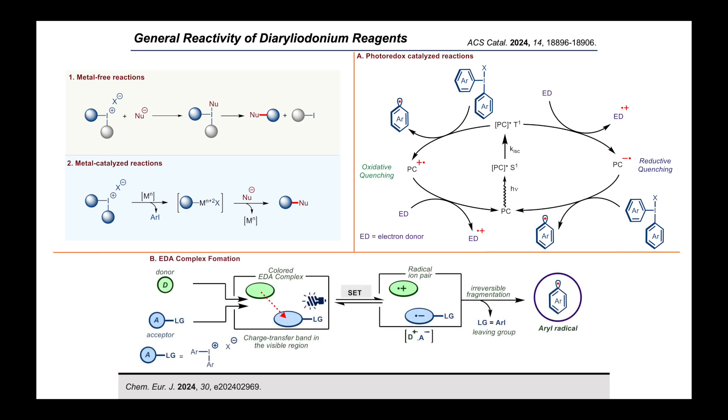On the other hand, the generation of aryl radicals from diaryl iodonium reagent can also be possible without photocatalyst under visible light irradiation. Here, diaryl iodonium reagent forms an electron-donor acceptor complex with an electron-rich donor molecule in the ground state. The charge transfer complex characterized by a UV band can absorb visible light in a specific visible region and subsequently undergoes single electron transfer producing two radical ion pairs. Then the radical anion species upon irreversible fragmentation forms aryl radicals and aryl iodide as the leaving group.